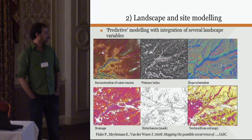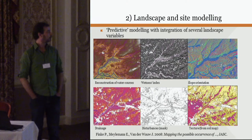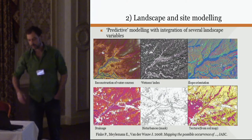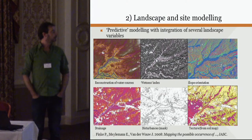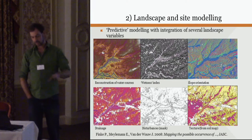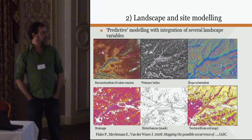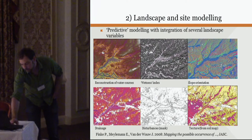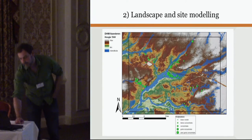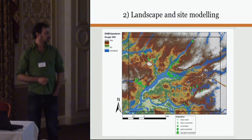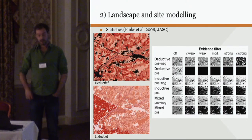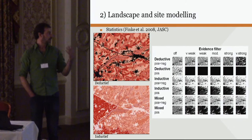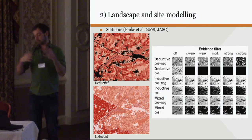A last example from 2008 was a predictive modelling project with integration of several landscape variables: reconstruction of watercourses using DTMs and historical maps, a derivative of the DTMs called the wetness index, and slope orientation — just a few examples of many landscape variables mapped based on DTMs in combination with soil maps and land use maps. It was published in 2008 in the Journal of Archaeological Science. We compared that with archaeological data from the Central Archaeological Inventory, using it to construct through correlation statistics a number of predictive models, testing and fine-tuning those.